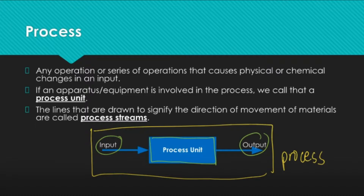It's very important that you don't confuse a process with a process unit. When you are given a term that describes a change or equipment used to make the change, you must be able to differentiate if that is a process or a process unit. For example, if I ask you what is baking — is it a process or is it a process unit? The answer is it's a process, because baking is the process of transforming raw ingredients such as wheat flour, eggs, milk, sugar, etc. into your output which is bread, cake, or whatever. So if baking is the process, what is the process unit? The answer is an oven, because the oven is used to produce the changes needed to call the process baking.